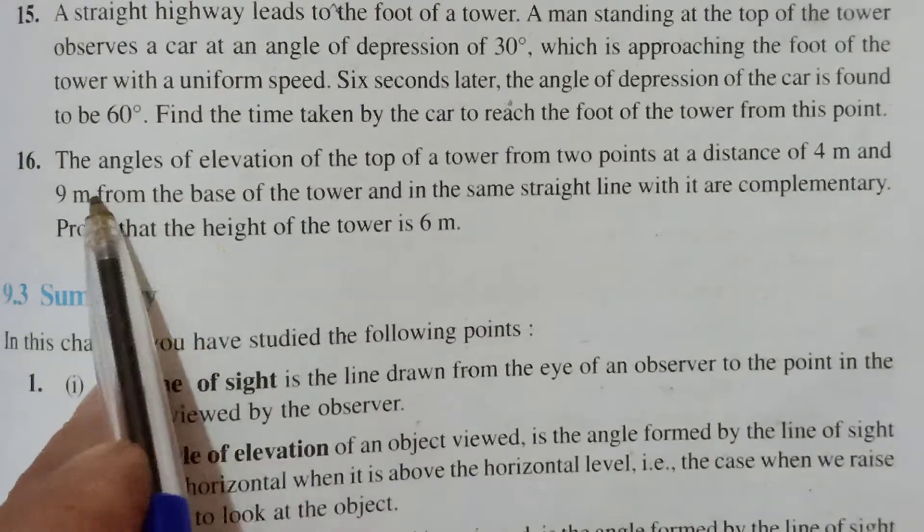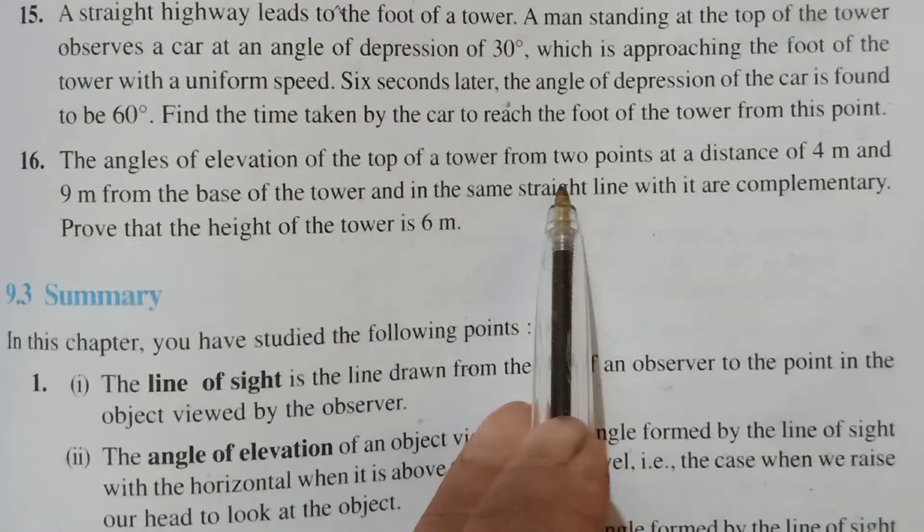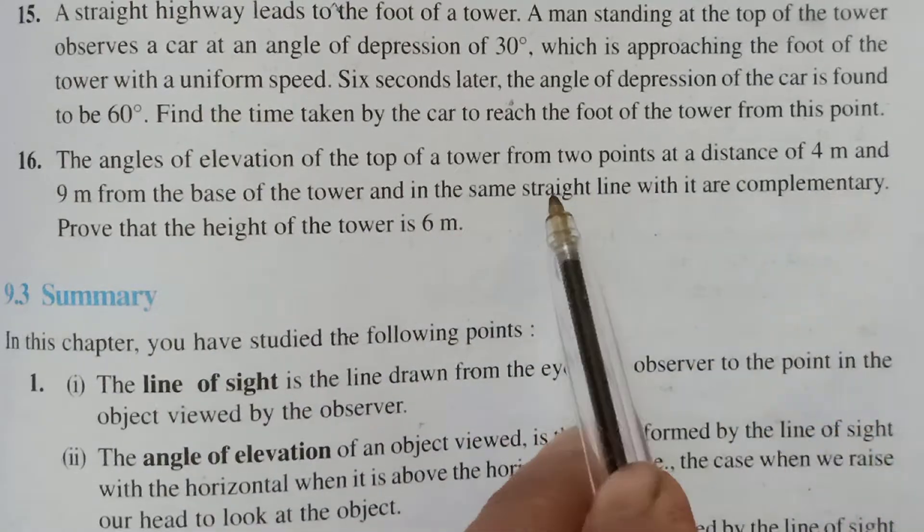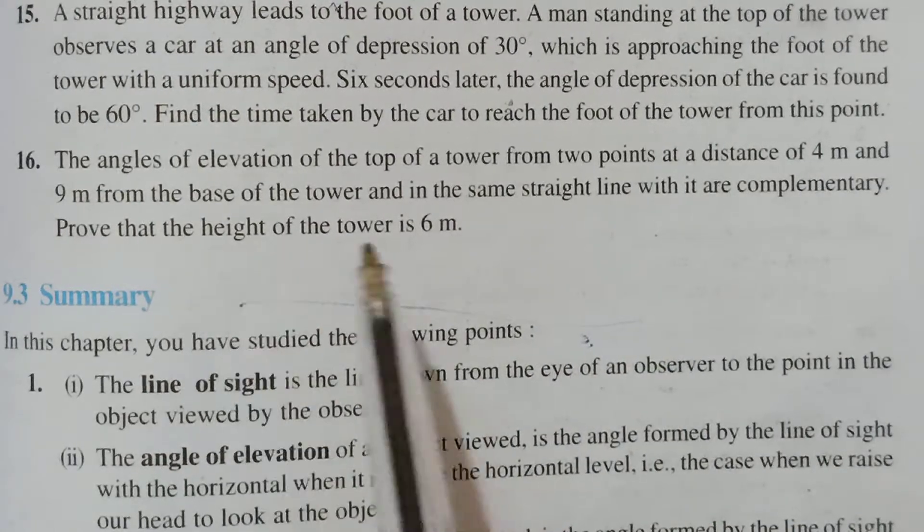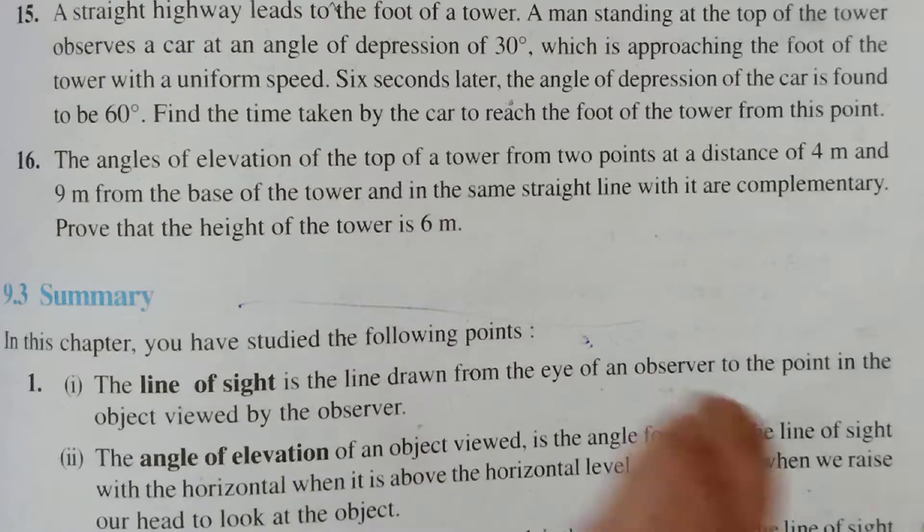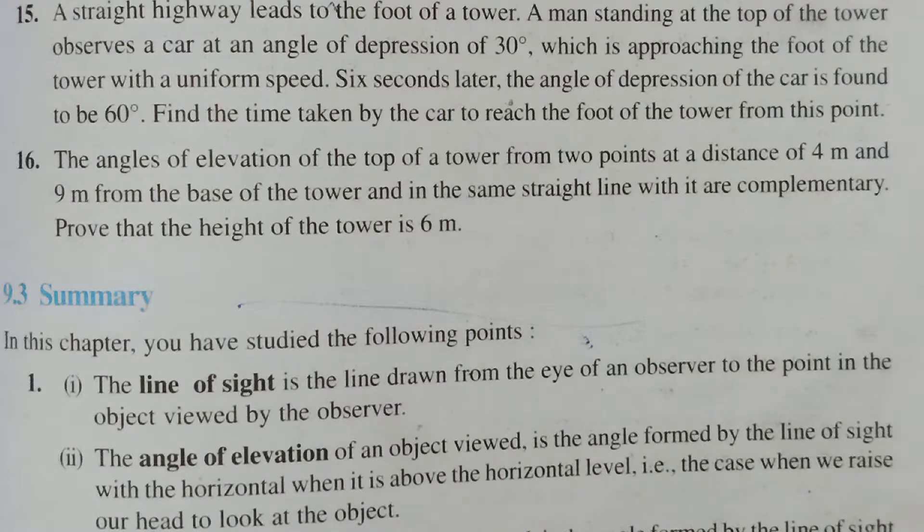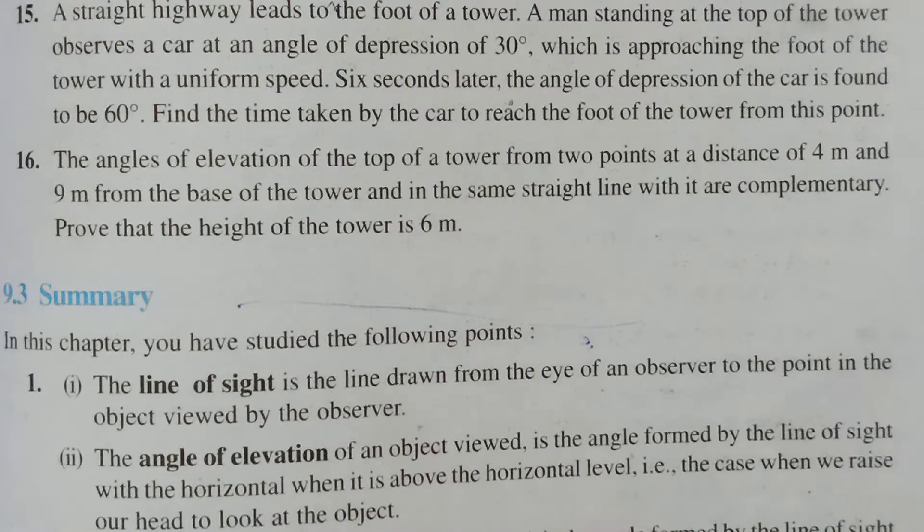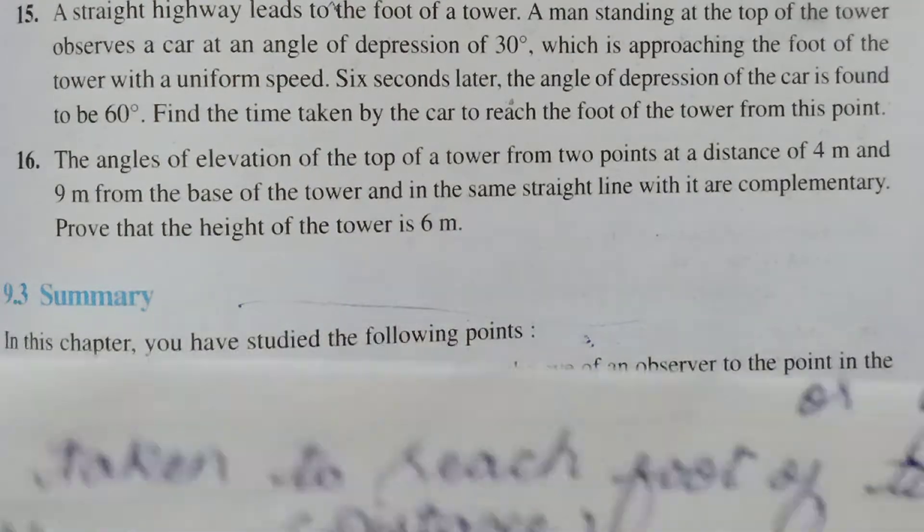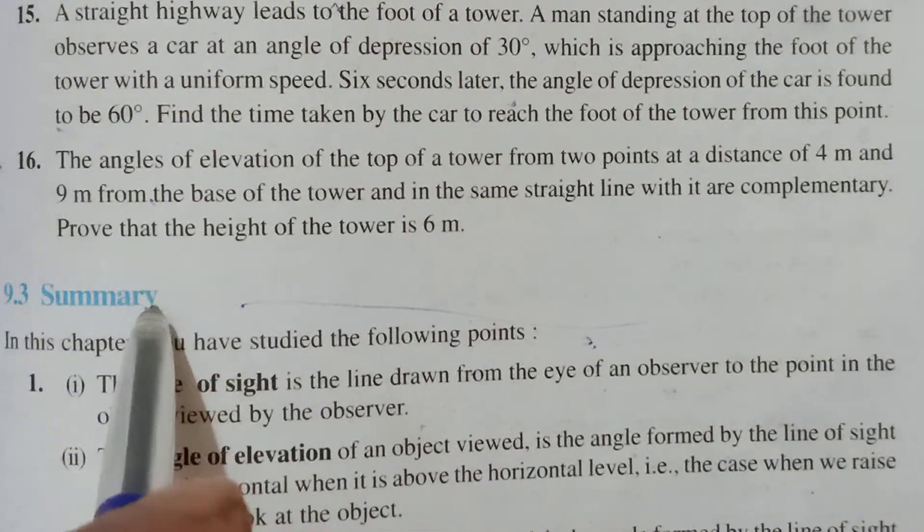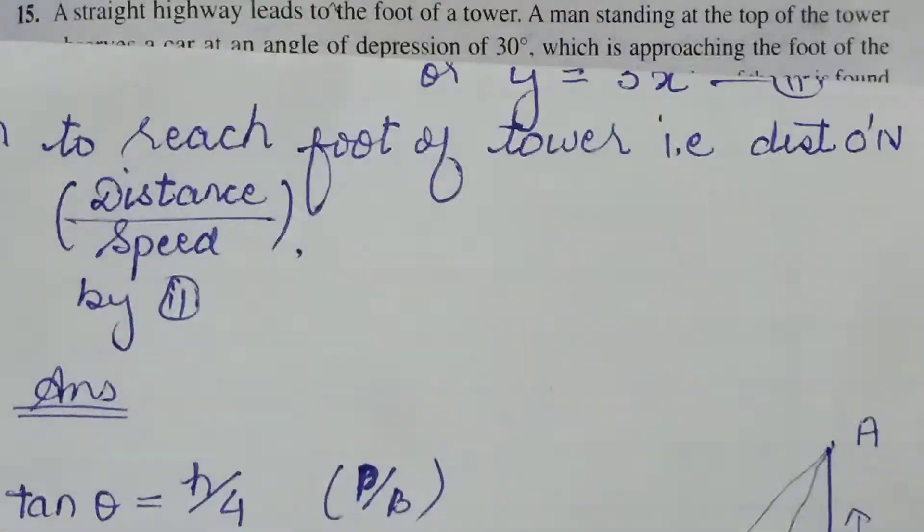Next, the last question children. The angle of elevation of the top of a tower from 2 points which are at a distance of 4 meters and 9 meters from the base of the tower, and they are in the same straight line, are complementary of each other. The angles of elevation are complementary. Complementary angles means summing up to give you 90. So if one angle is theta, its complement would be 90 minus theta. If the sum of both is 90, if one angle you assume is X, then the other is 90 minus X.